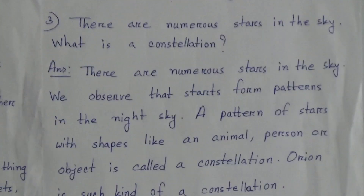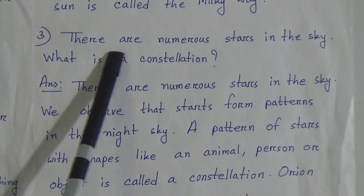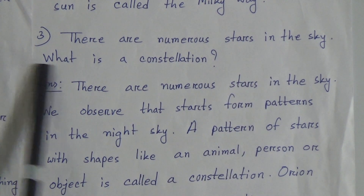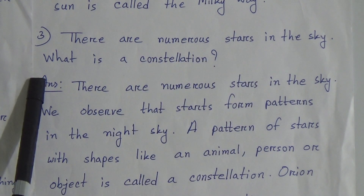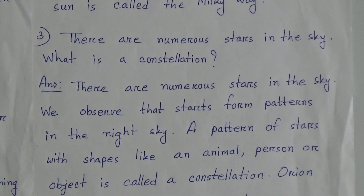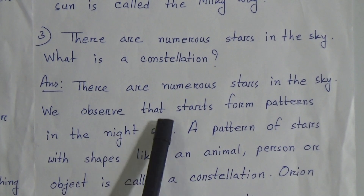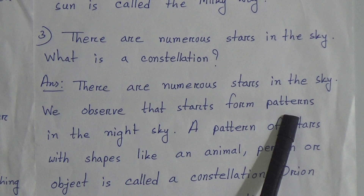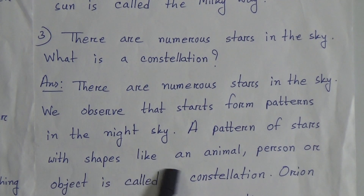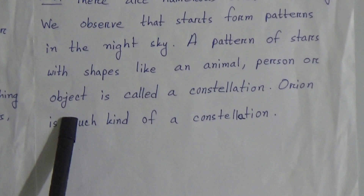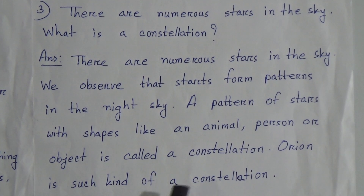The galaxy whose member is our sun is called the Milky Way. Now question number 3, the last short question of this chapter: There are numerous stars in the sky. What is a constellation? Answer: We observe that stars form patterns in the night sky. A pattern of stars with shapes like an animal, person or object is called a constellation. Orion is such a kind of constellation.